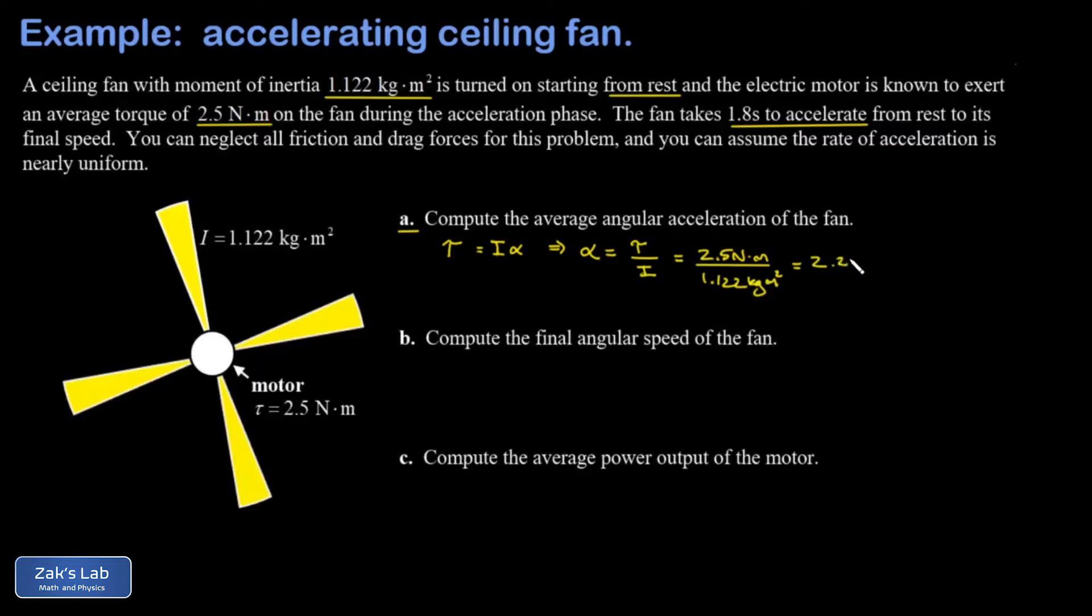Now you might be wondering, how do I get from newton meters in the numerator and kilogram meter squared in the denominator and come out with radians per second squared? It's worth investigating the units for a moment. We have to remember that a newton is a kilogram meter per second squared, and that comes from Newton's second law F equals ma, so a newton has units of mass times acceleration.